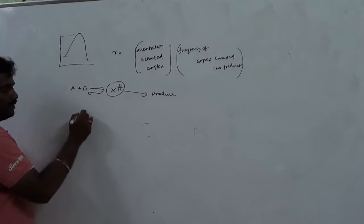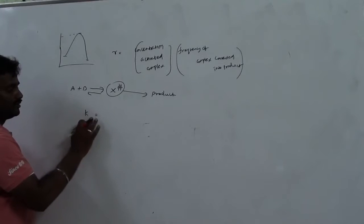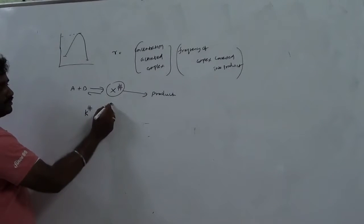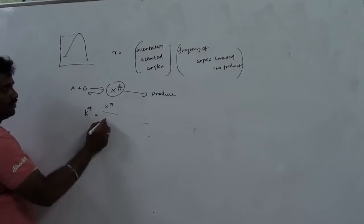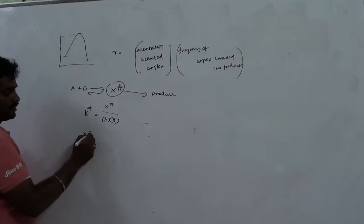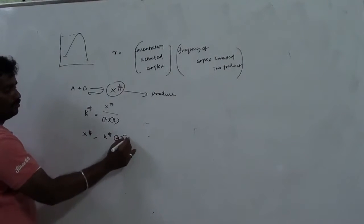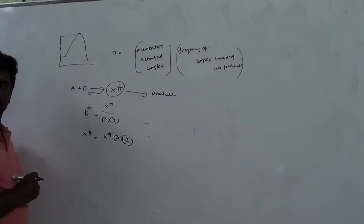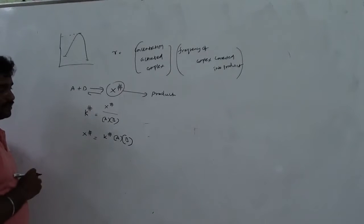We define K‡ as the equilibrium constant. K‡ will be equal to the concentration of X‡ (the activated complex). So X‡ equals K‡ times [A] times [B]. Now we have obtained the concentration of the activated complex.